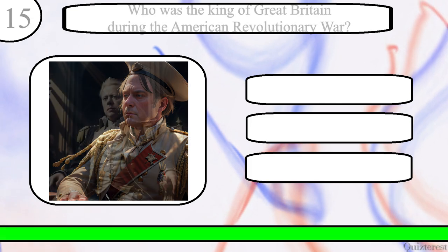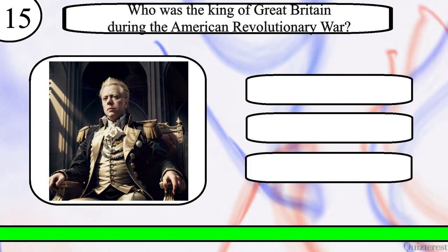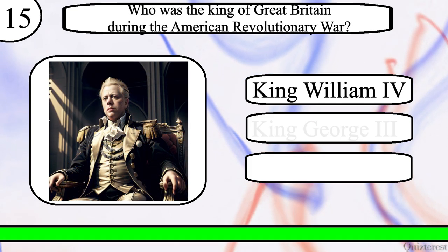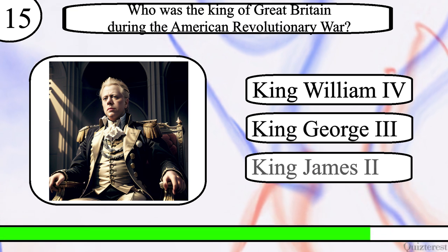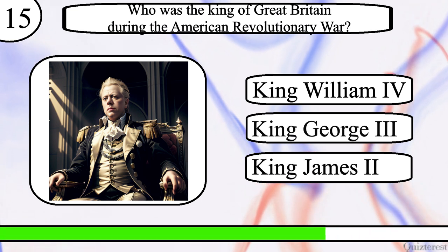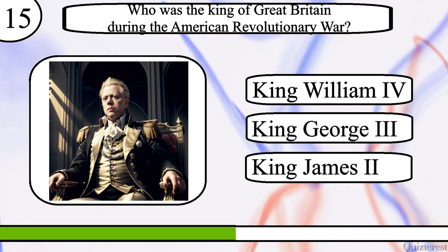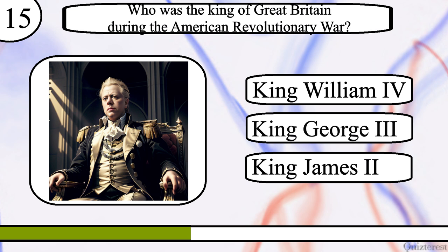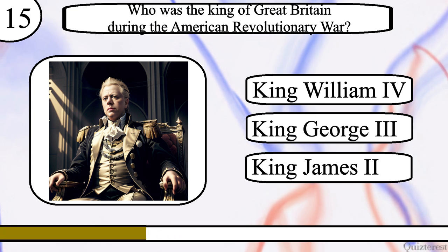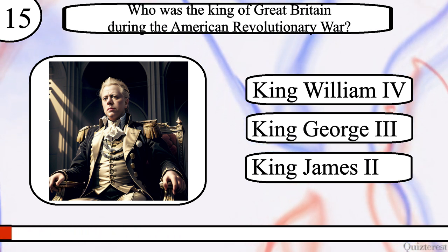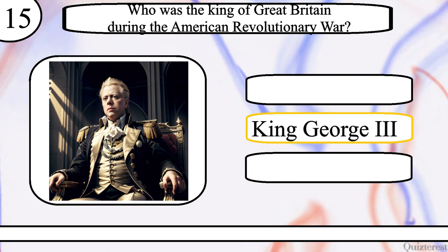Question 15. Who was the King of Great Britain during the American Revolutionary War? King William Thor, King George III, or King James II? The correct answer is King George III.